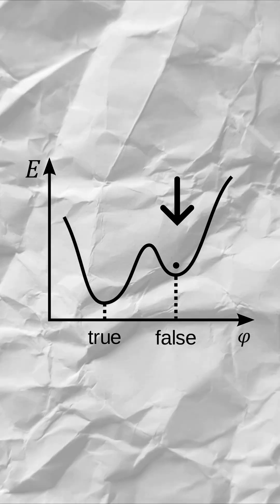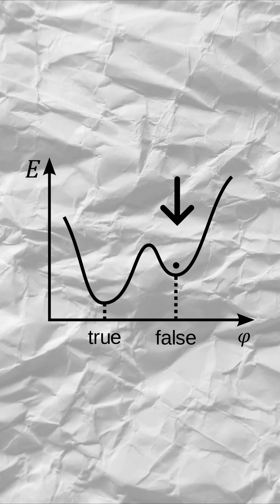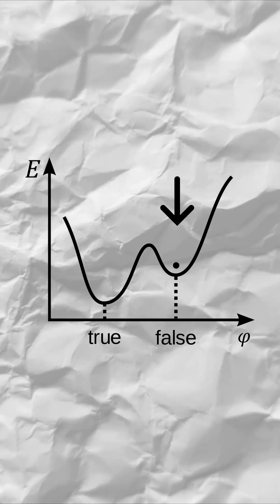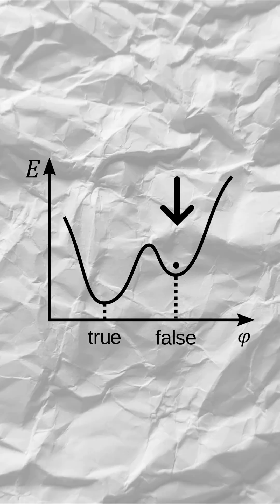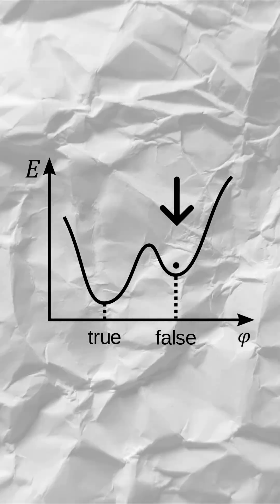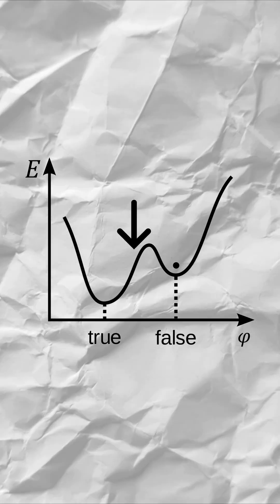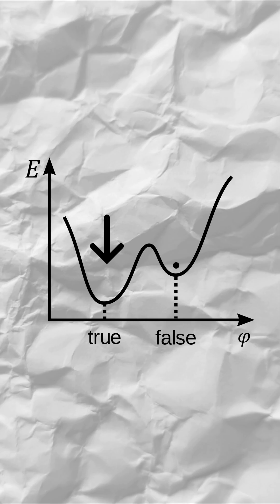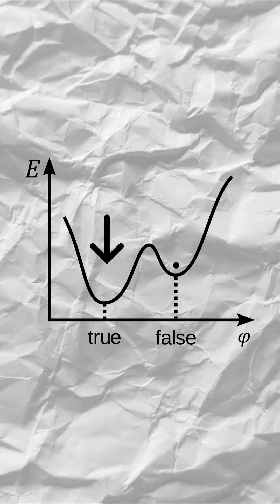A false vacuum appears stable, yet it's not the most stable state possible. It's like a ball resting in a shallow dip on a hillside, seemingly secure, but just one nudge away from rolling into a deeper, more stable valley.